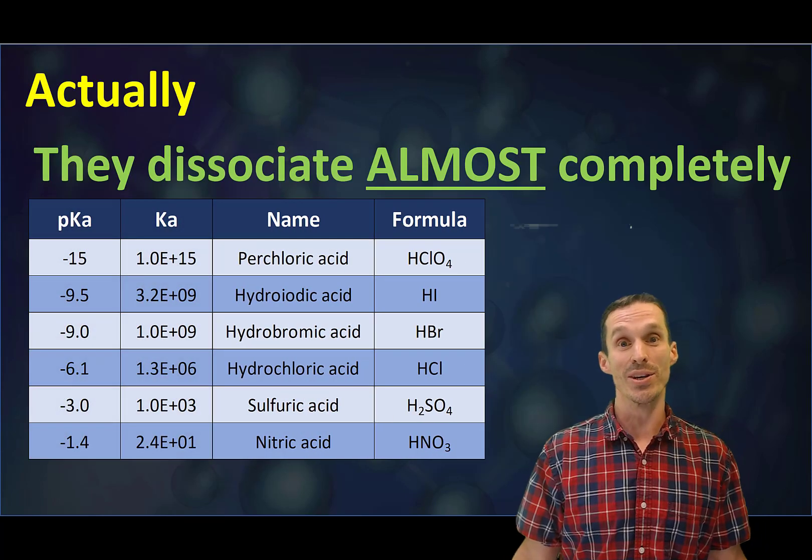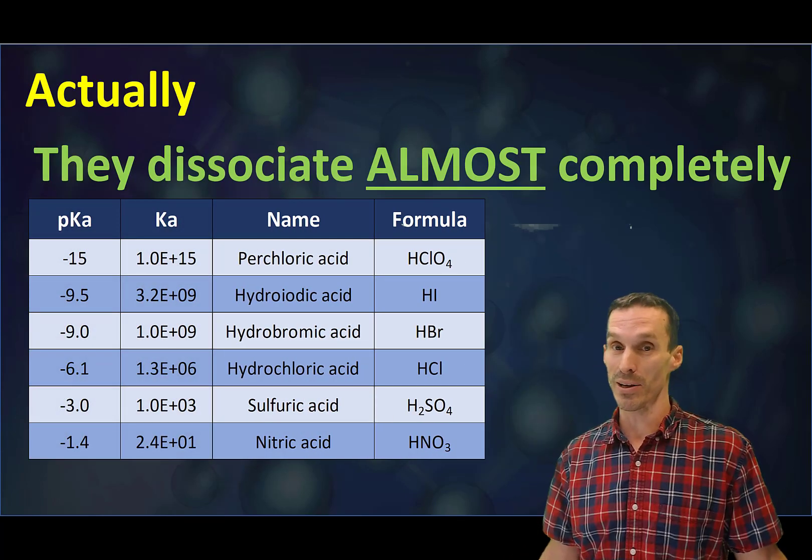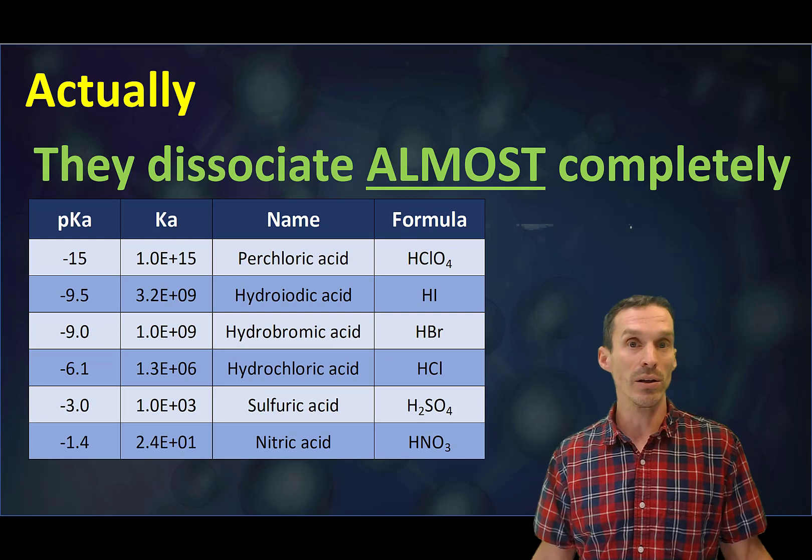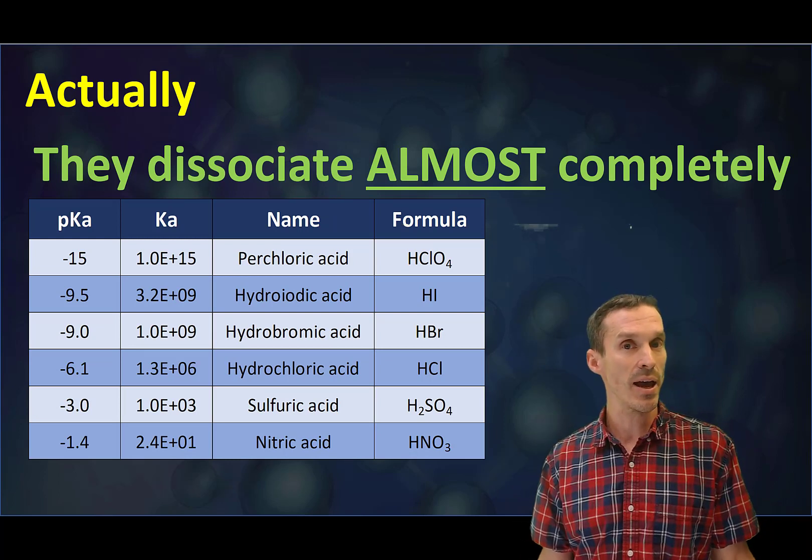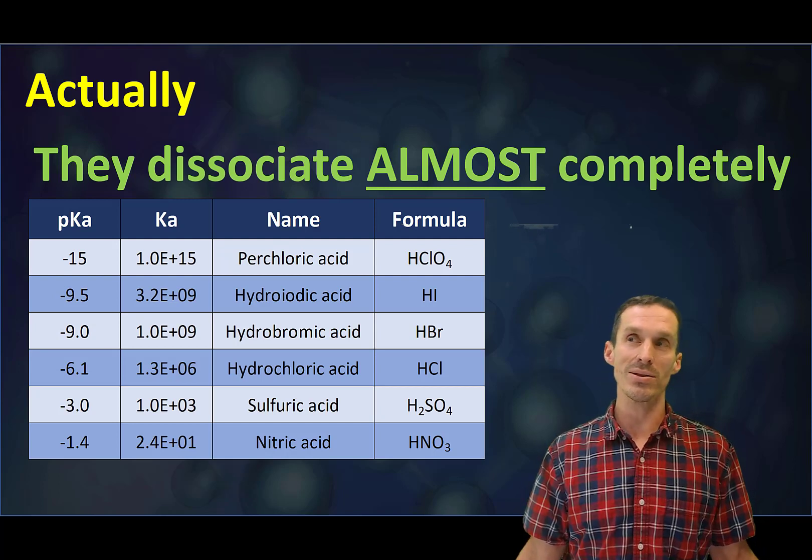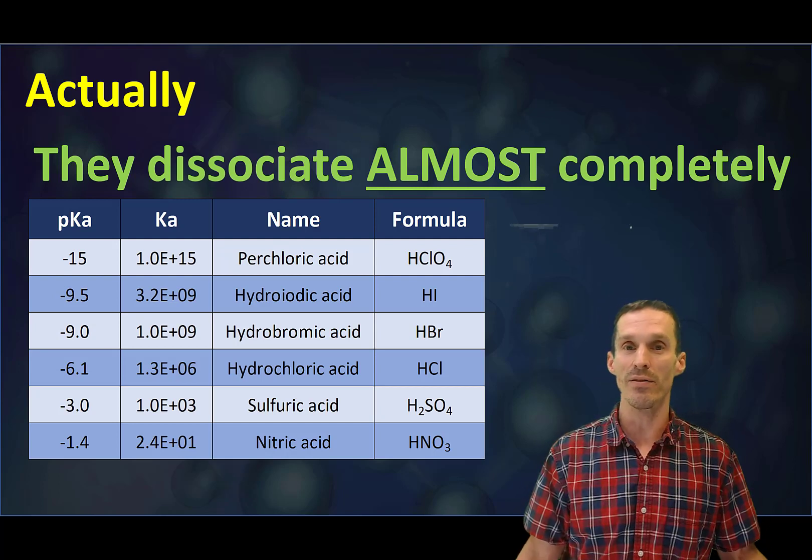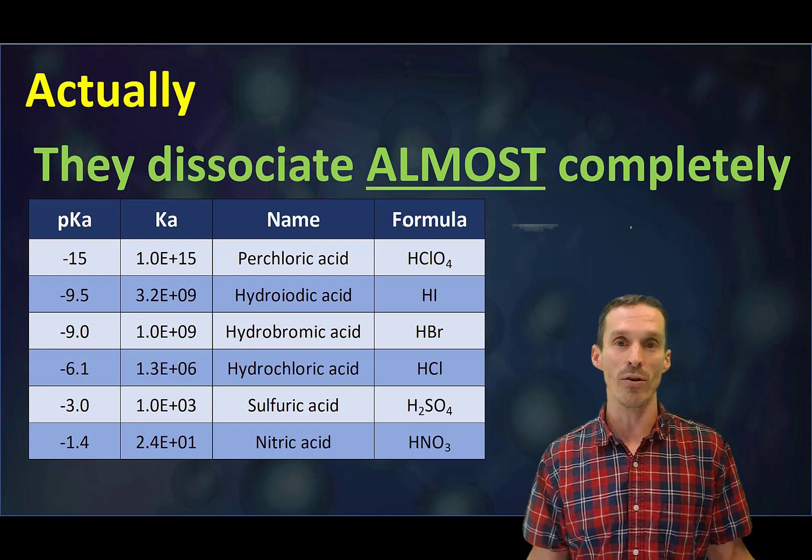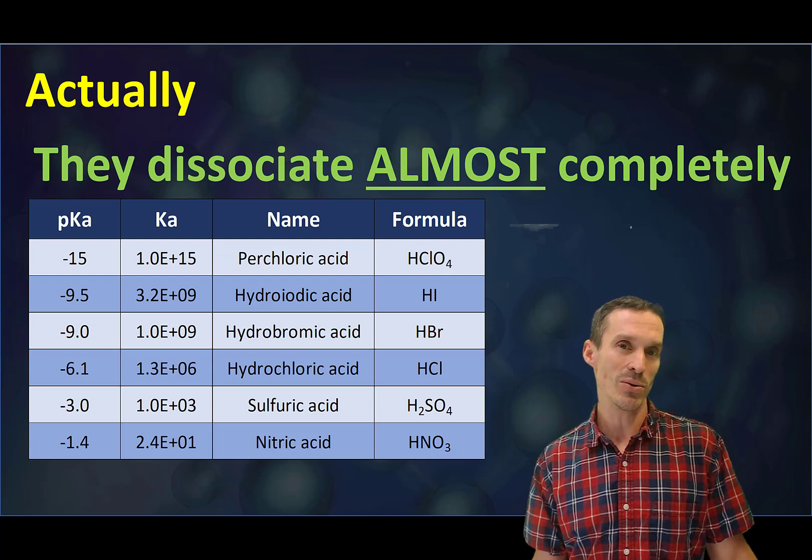If you look on the table here you'll notice that you can actually look up pKa values or Ka values for strong acids, or in other words it means that there has to be a little bit of the undissociated acid left over in solution. So how much are we talking about?